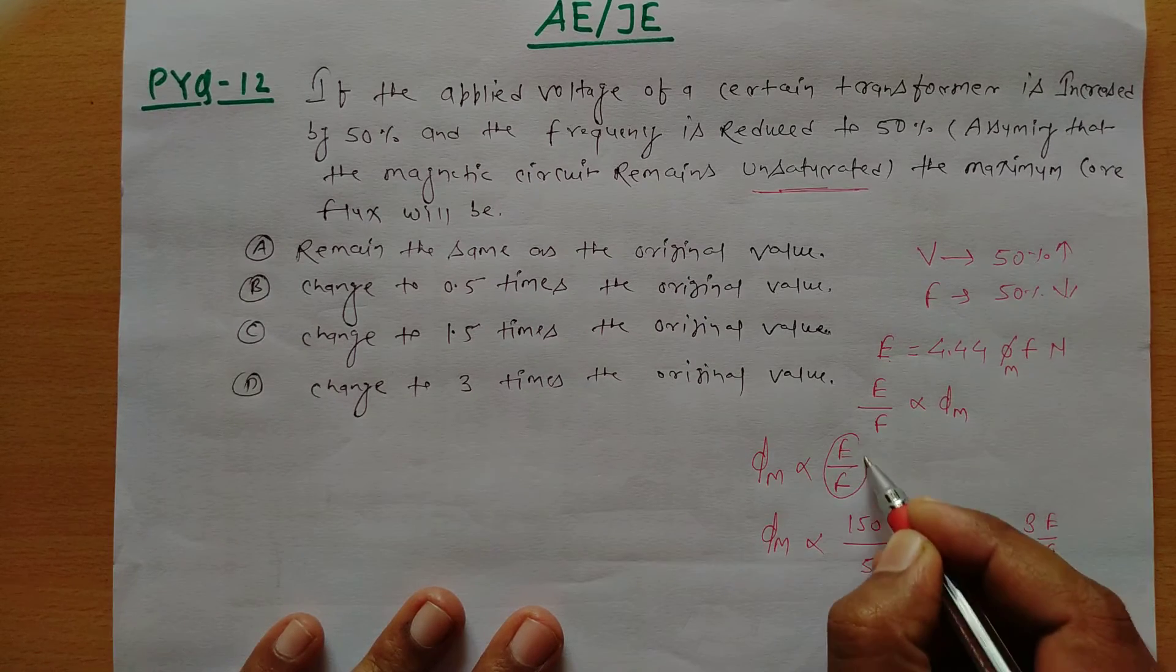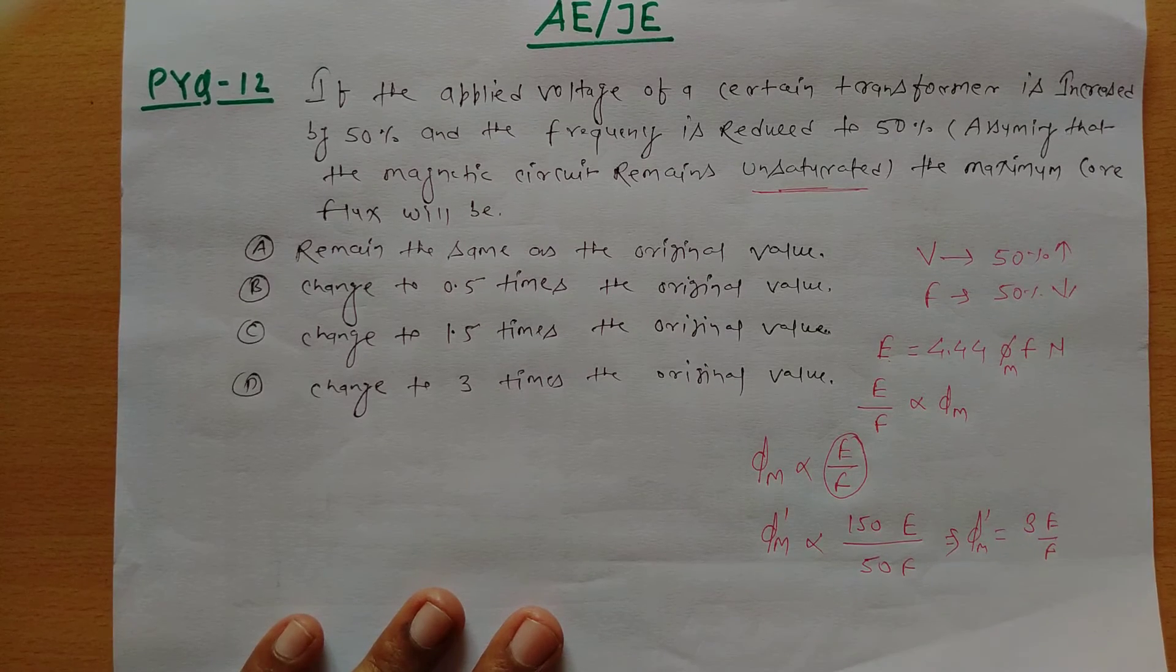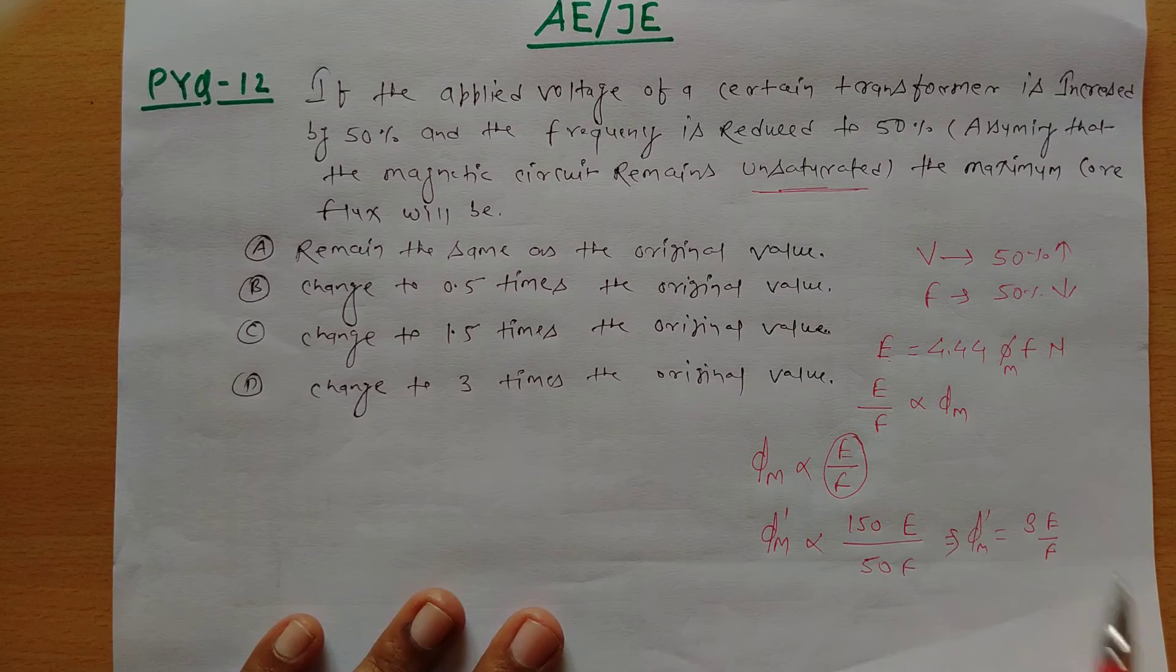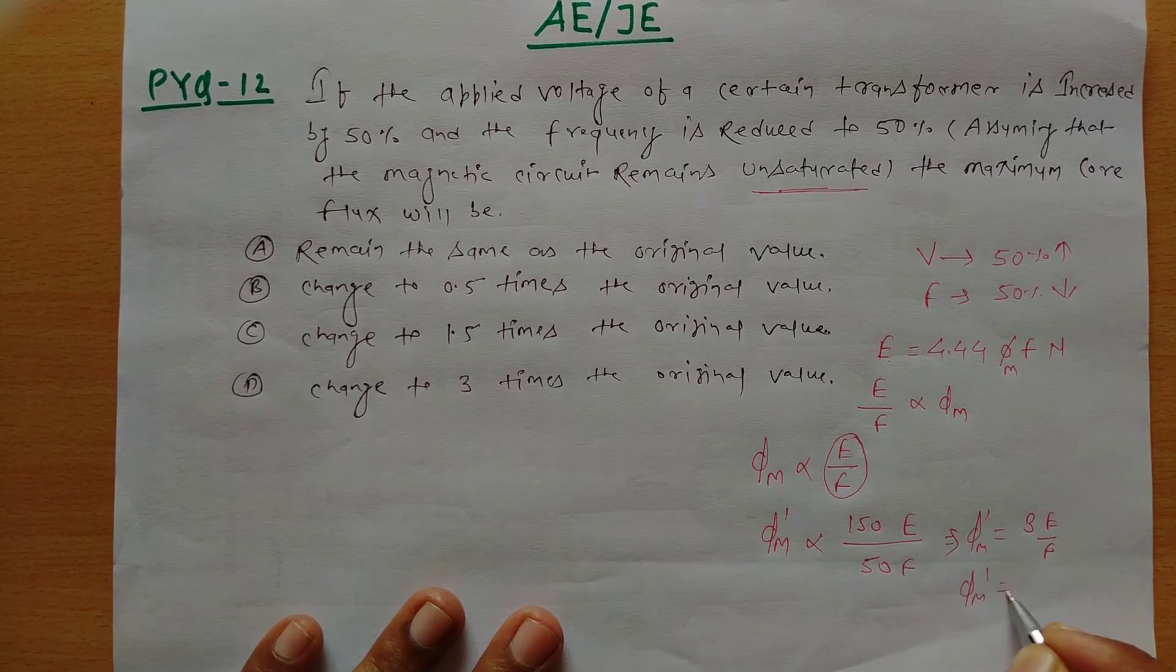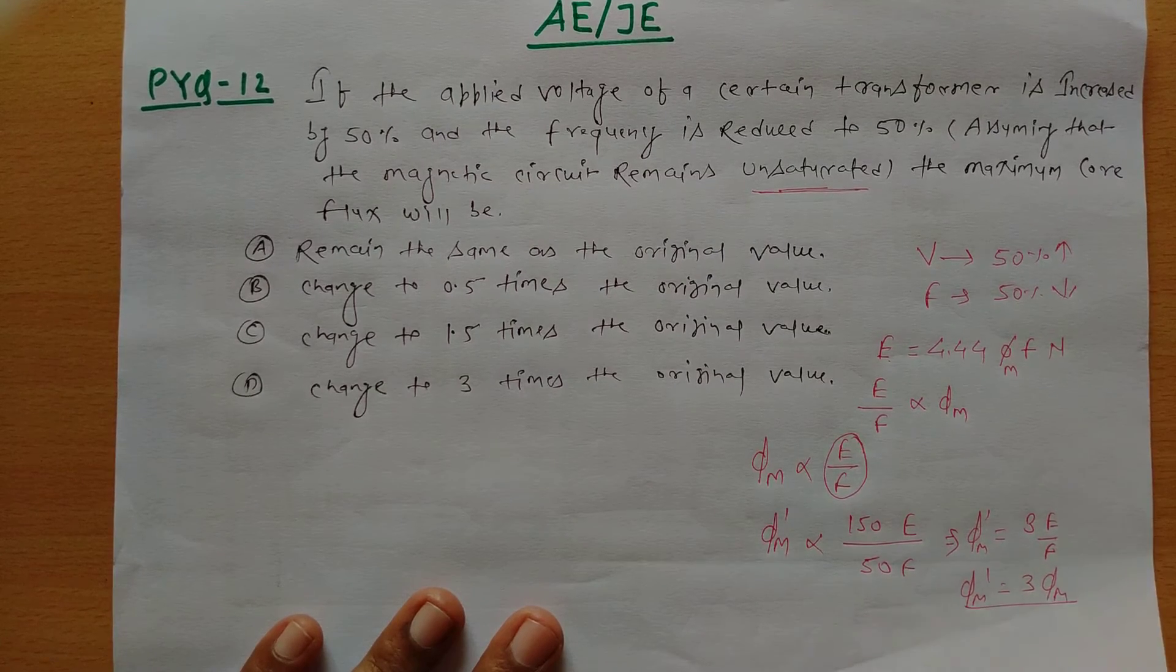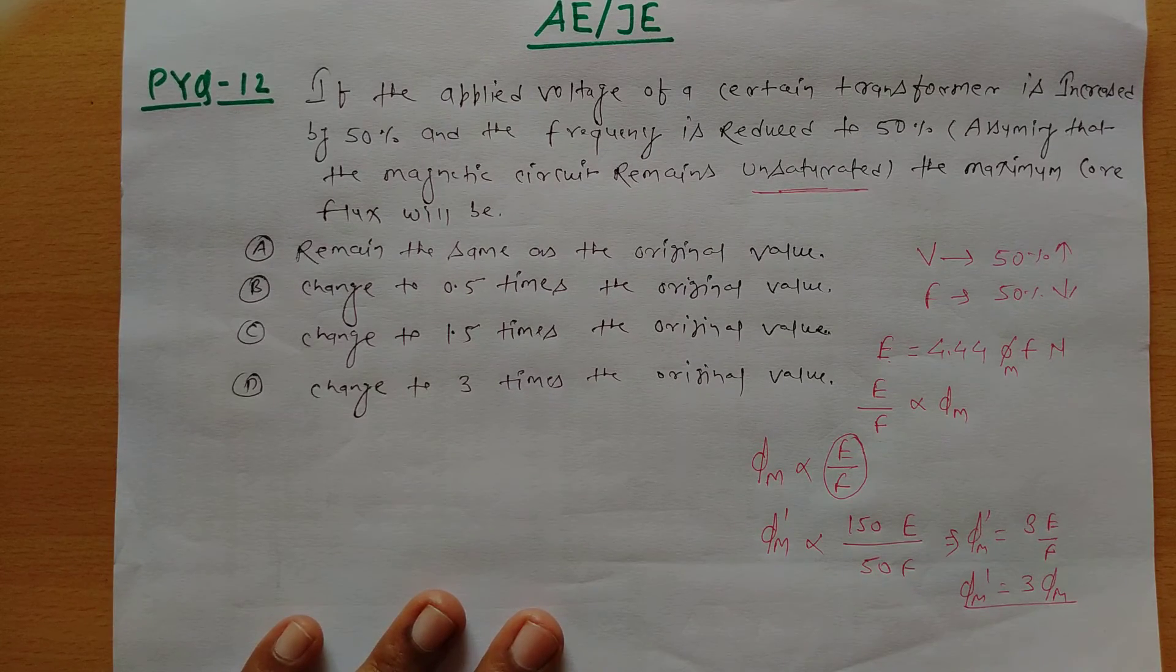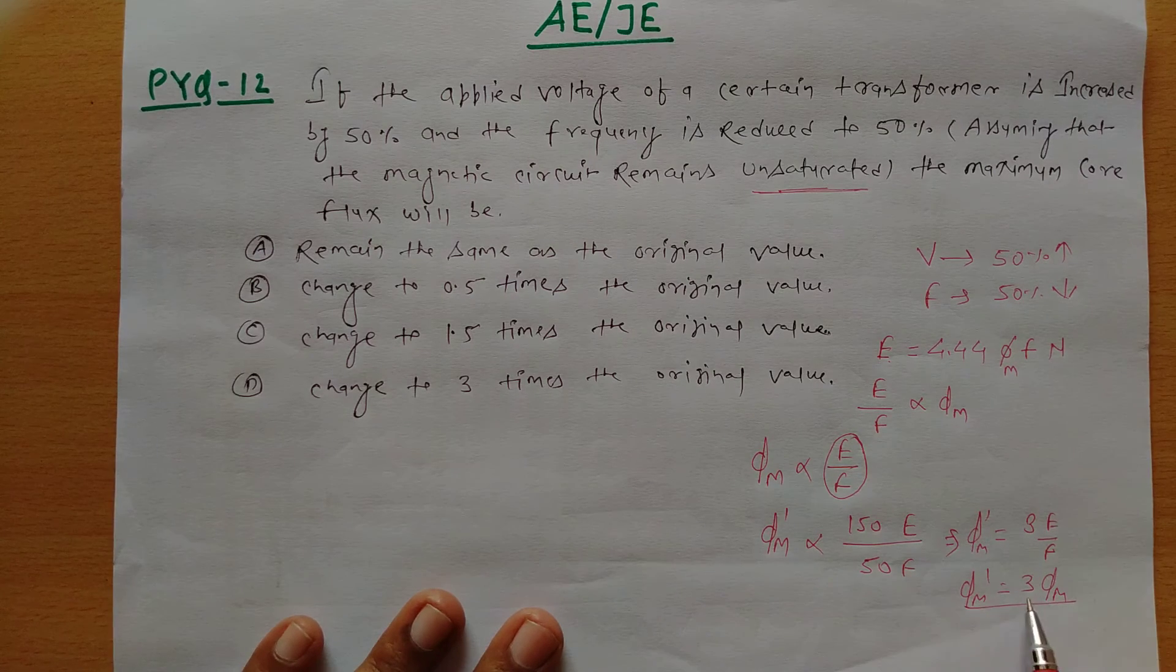So this becomes 3 into E by f, meaning if the previous quantity is φm, let's call this φm dash, and compare it with the previous quantity, then φm dash will be 3 times of the original, so the core flux changes by 3 times the original value.